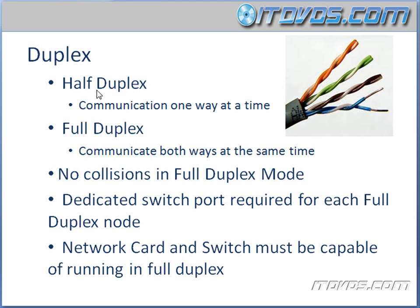First there's half duplex, and this is communication one way at a time. A common example of this is a walkie-talkie. When you're talking on a walkie-talkie, you can't hear the other person. You have to un-press the button, then the other user has to press the button, and then they can talk and you can hear them. So it's one way at a time.